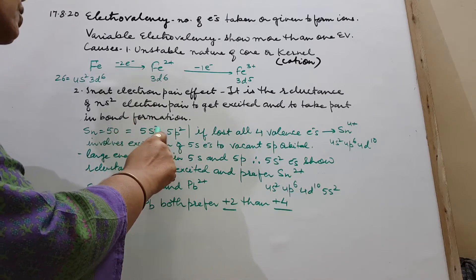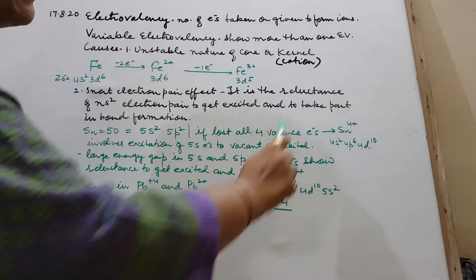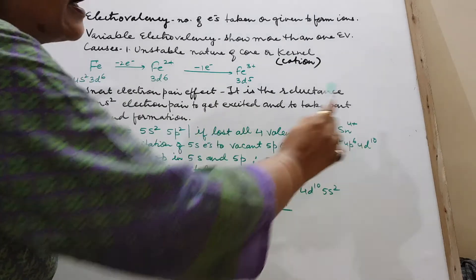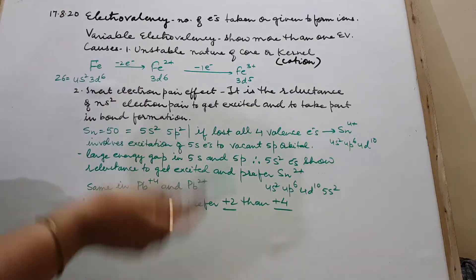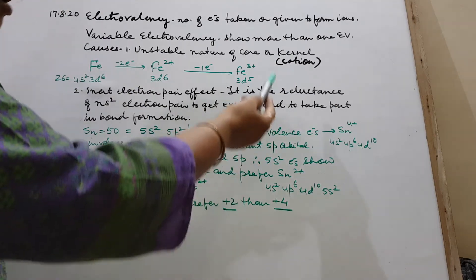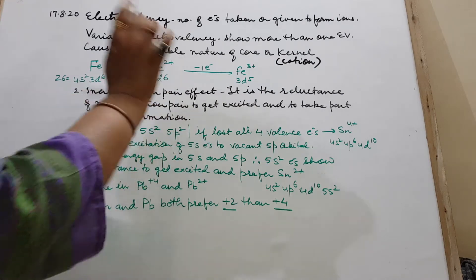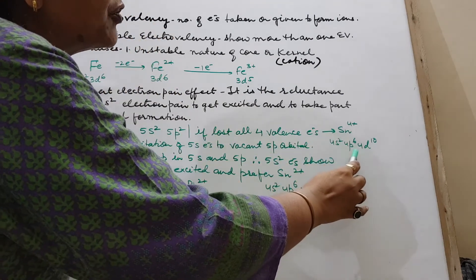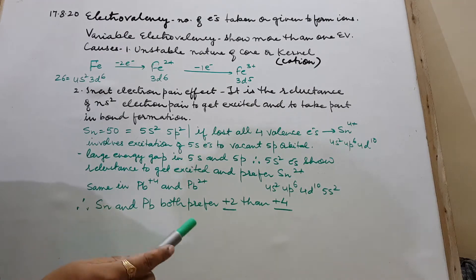Now if it loses all 4 valence electrons, then it will form Sn4+ ion. And this will have the configuration now of the inert gas because outer shell electrons all lost: 4s2, 4p6, and 4d10. It's okay.